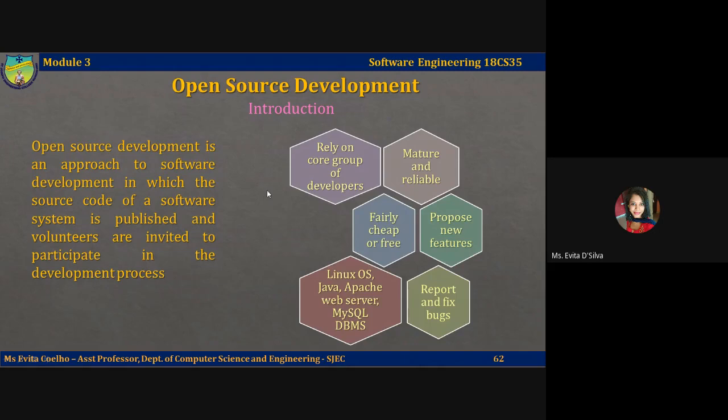A key benefit of using open source products is that the software will be mature and reliable. This is because it has already been used and tested by a large population of users who are willing to fix problems themselves rather than wait for new releases. So bugs are discovered and repaired more quickly than is usually possible with proprietary software.